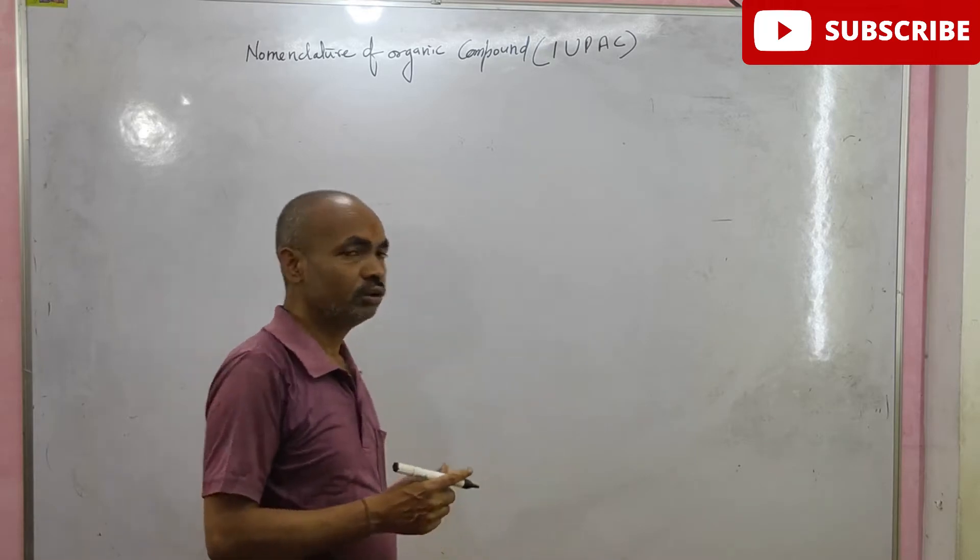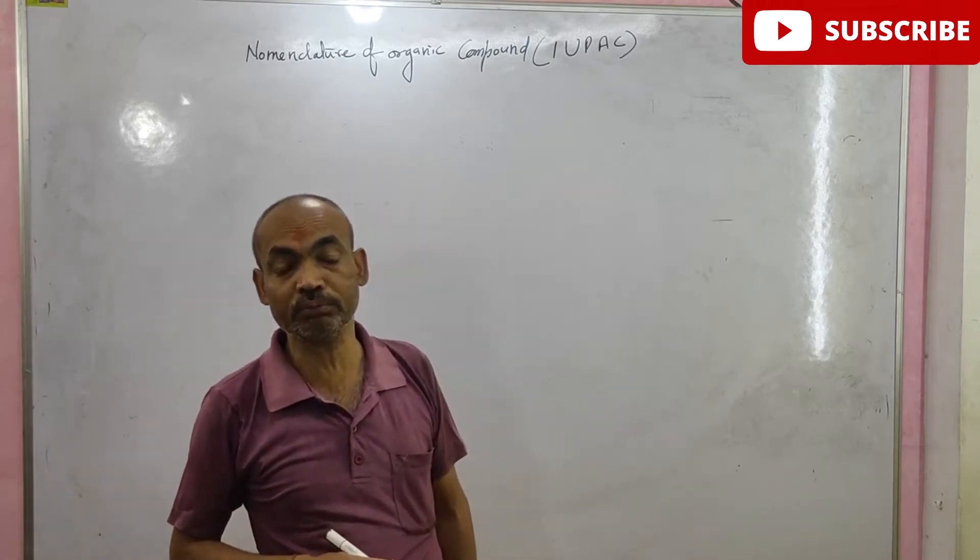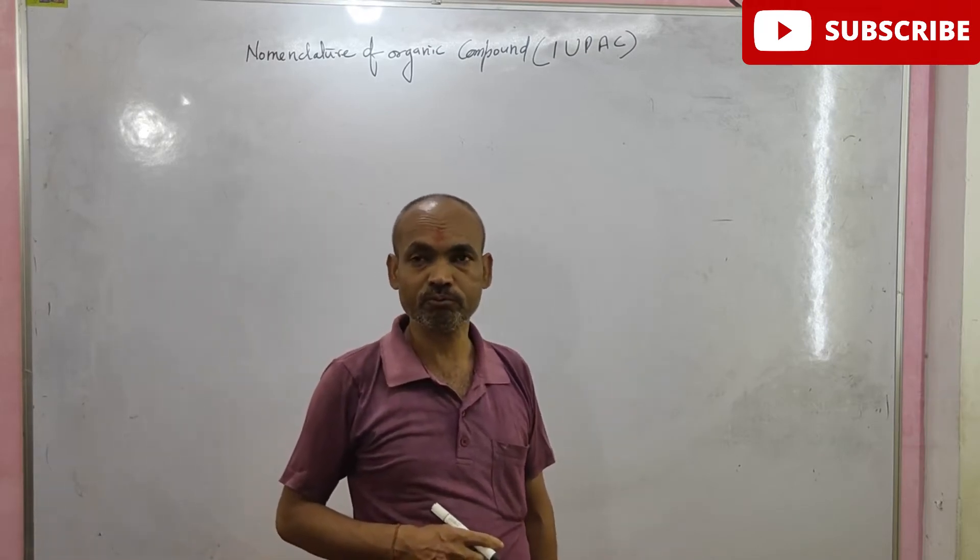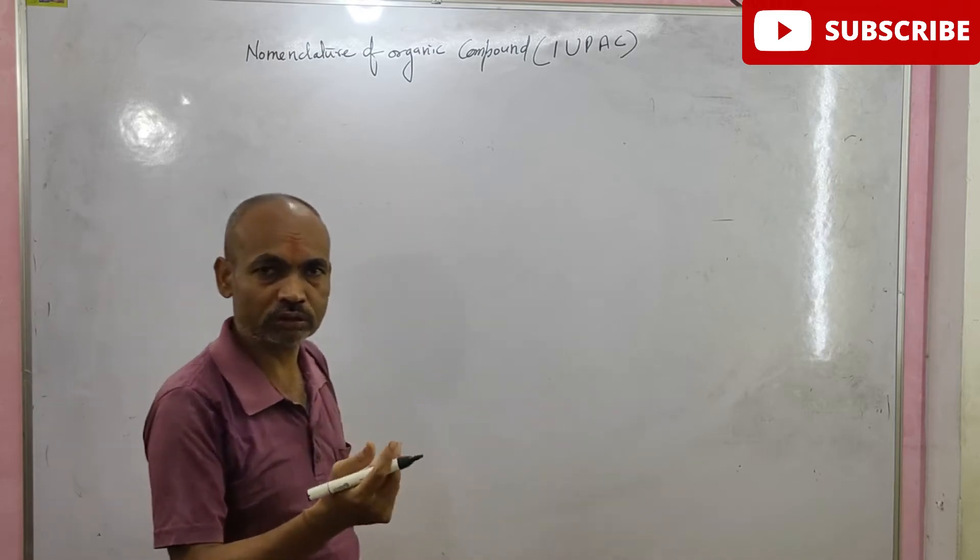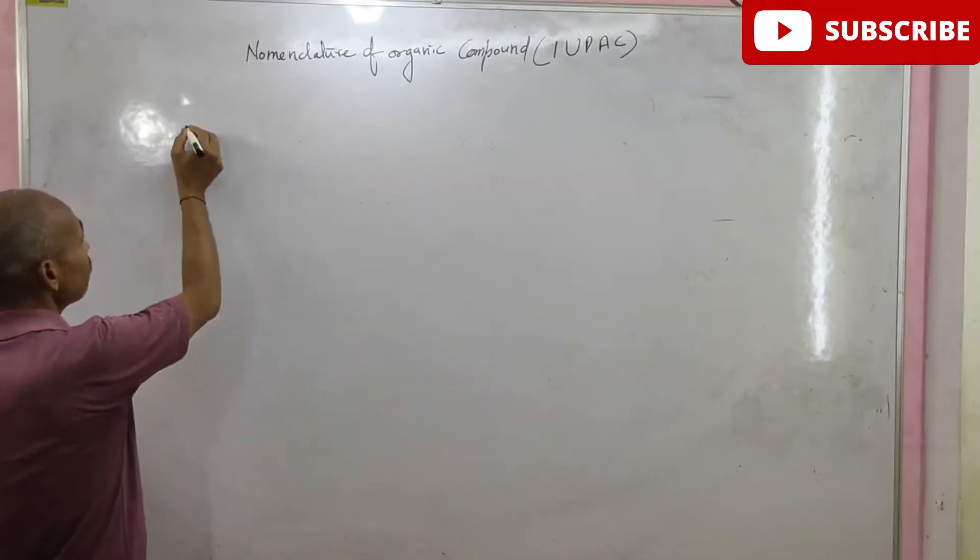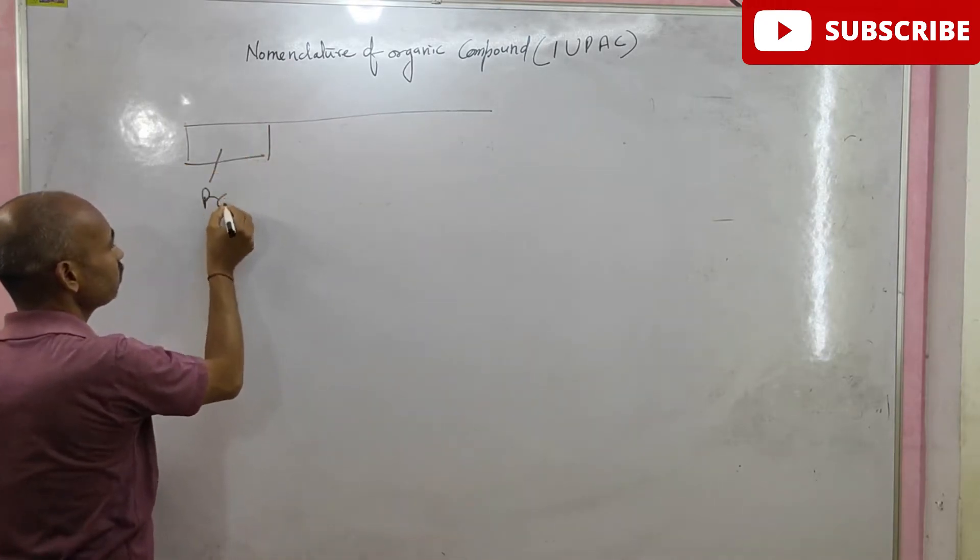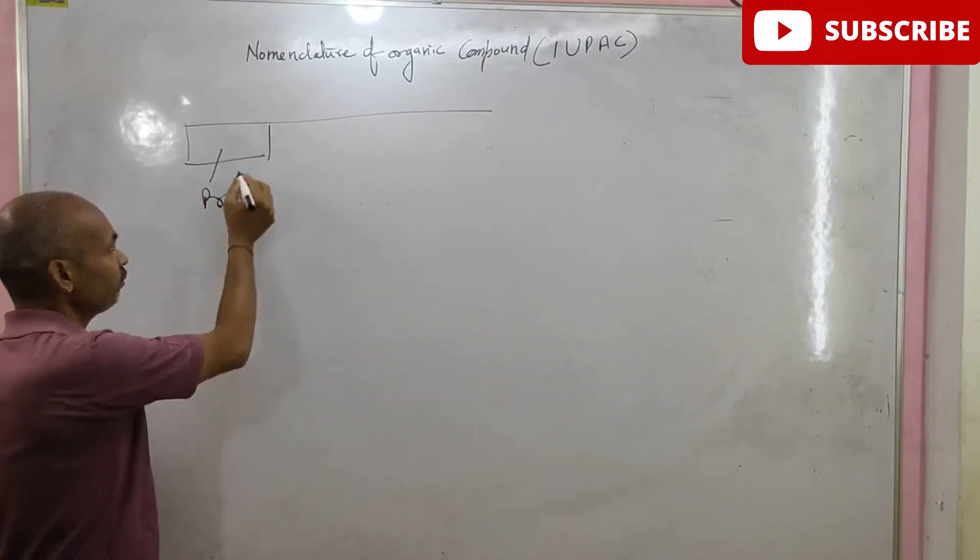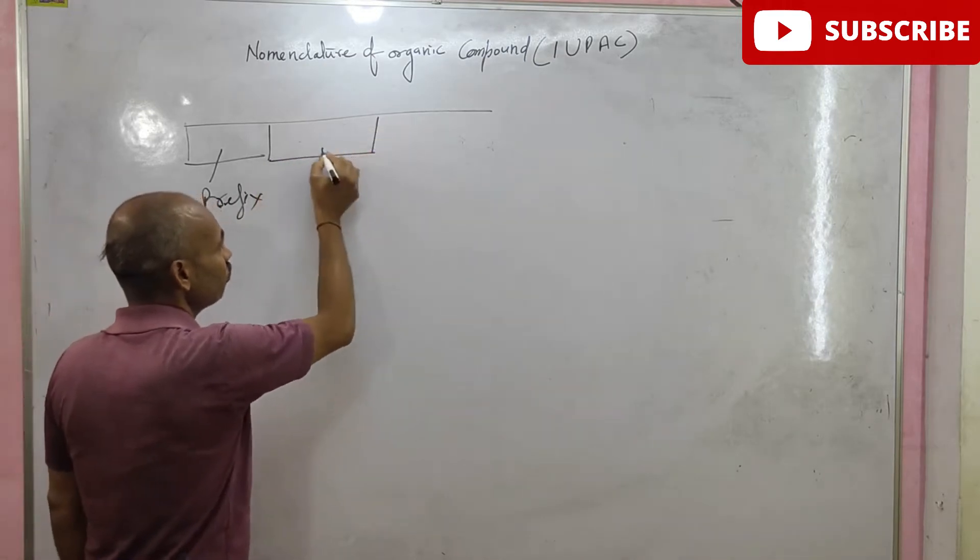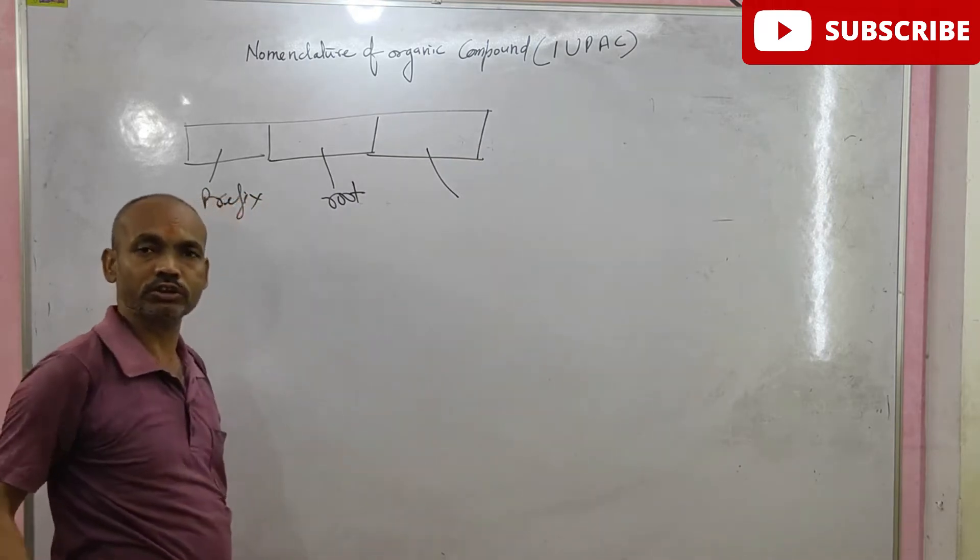IUPAC name. Writing IUPAC name, some students feel very difficulty. But it is very easy if you understand some topic. In IUPAC, there are three important points: Prefix, root, and third point is suffix.